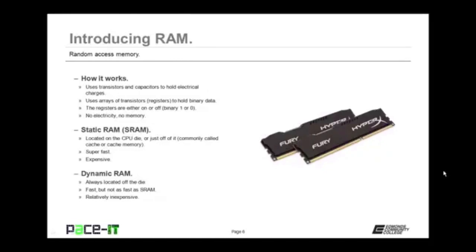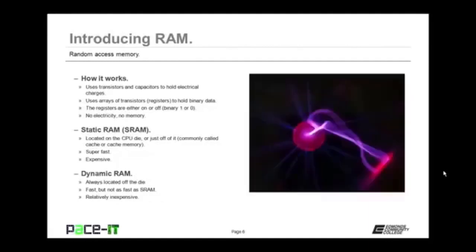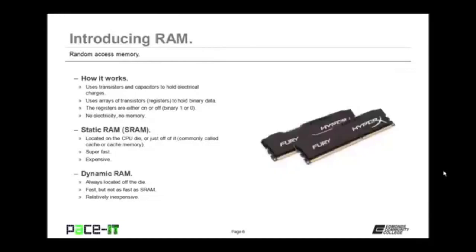There are two basic types of RAM. The first is static RAM, SRAM, located on the CPU die or just off of it. It's commonly referred to as cache or cache memory. It's super fast but also very expensive, so it's used in limited amounts. Dynamic RAM, on the other hand, is always located off the die. It's fast, but not as fast as static RAM — though it's relatively inexpensive, so we can use a whole lot more of it.